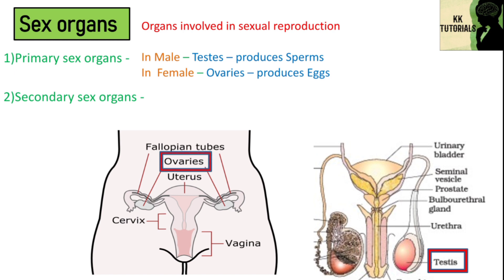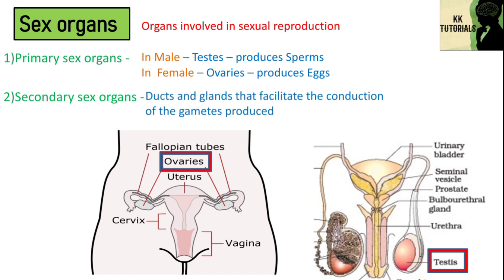The main function of primary sex organs is gametogenesis, i.e. production of gametes, and secretion of sex hormones. The secondary sex organs don't produce gametes. They include the ducts and glands that facilitate the conduction of gametes produced.